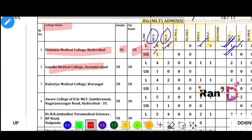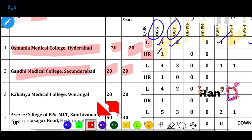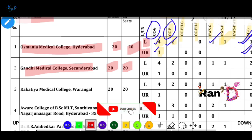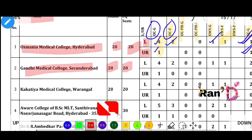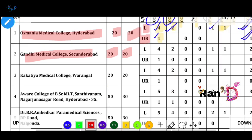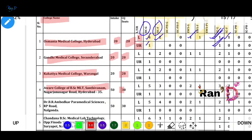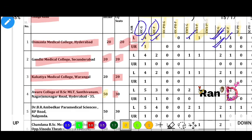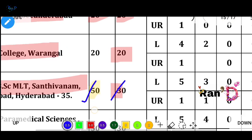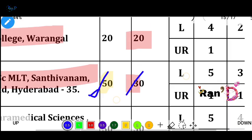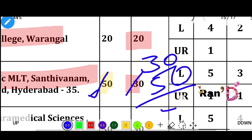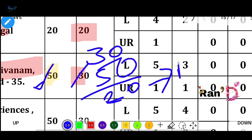Next college is Gandhi Medical College - total intake of 20 seats. Government college with no private seats, only converter quota. Next is Kakatiya Medical College with 20 seats. Next is a private college for BSC MLT with 50 total seats intake - 30 under OJC converter quota and the rest as management quota.